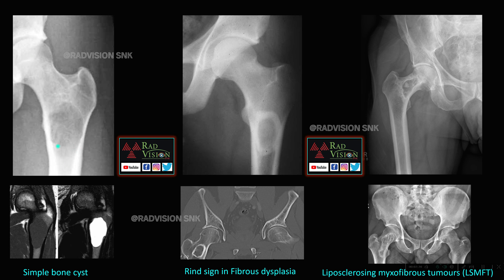Next is a similar picture involving the proximal femur, especially the shaft. Here you can see a well-defined radiolucent expansile lesion with no significant sclerotic rim. This was a simple bone cyst, which appears hypointense on T1 and hyperintense on T2.